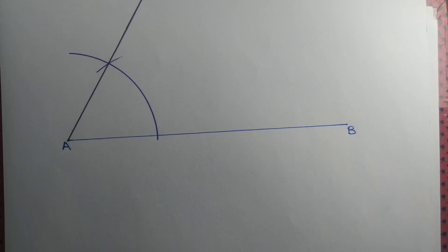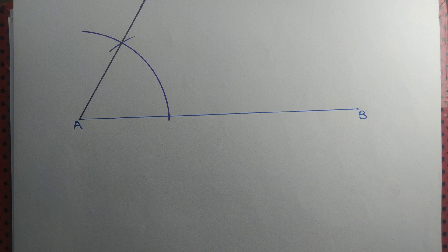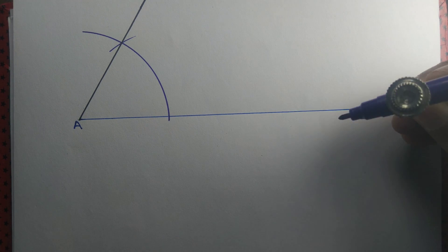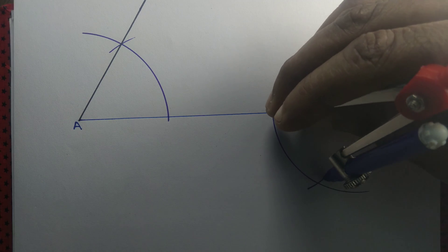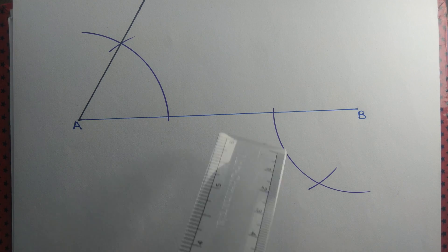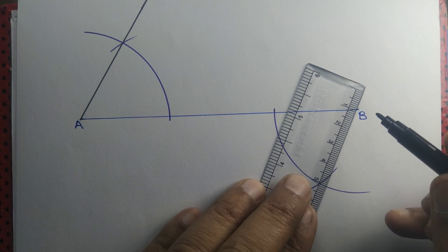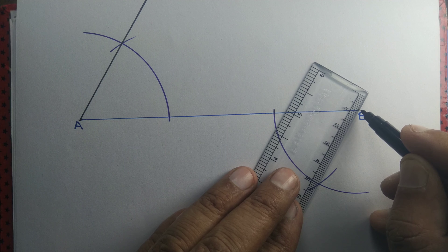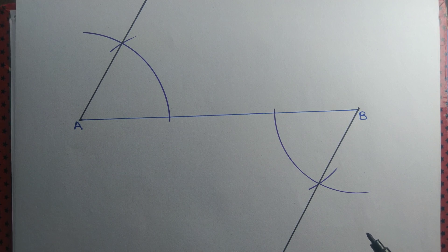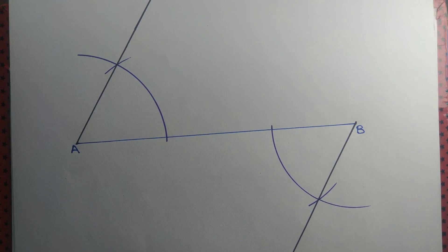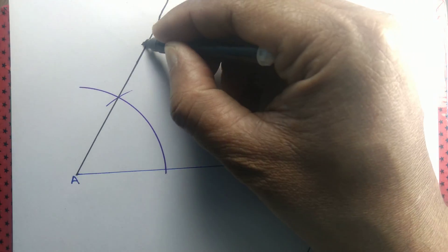Similarly, we draw an angle measuring 60 degrees from point B. Remember, our idea is just to draw a pair of parallel lines from A and B respectively. We will be using the idea that alternate interior angles are equal. So once again we draw 60 degrees from point B. We have drawn an angle measuring 60 degrees from point A as well as B. Observe that these two lines are parallel — and of course, they are parallel.